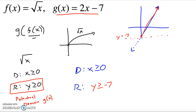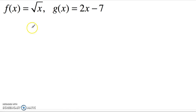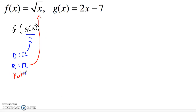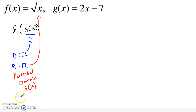Now let's keep these two functions but reverse the order — that was g of f of x, now let's look at f of g of x. The inside function is now g of x. Does g of x have any domain restrictions on its own? No, it's a linear equation — I can put anything I want into it. But then when I think about the range of g of x, the range is all real numbers. Are any of those going to cause a problem for my second function, square root of x? Yes — only the positive ones work.